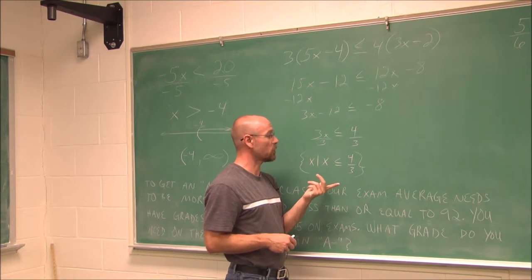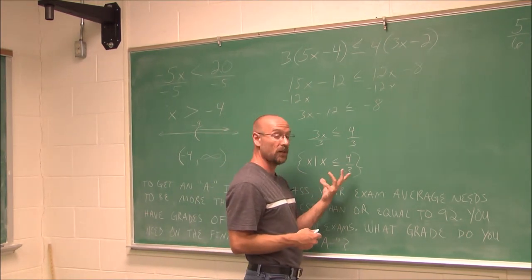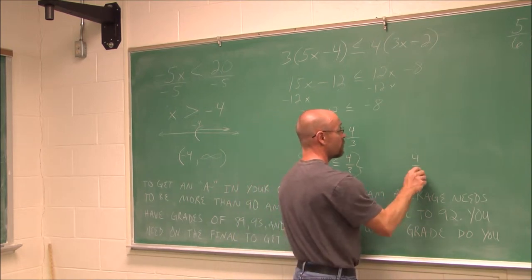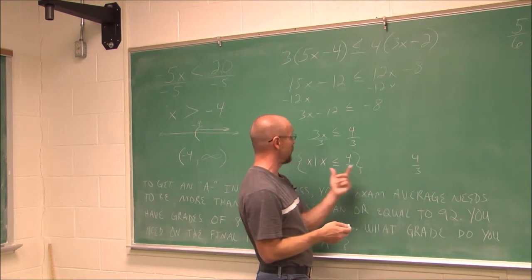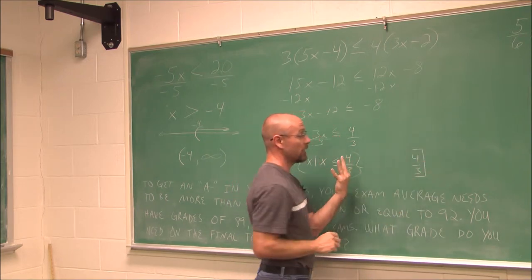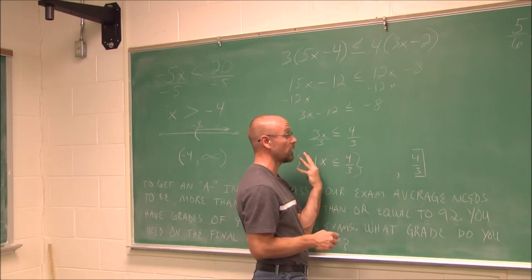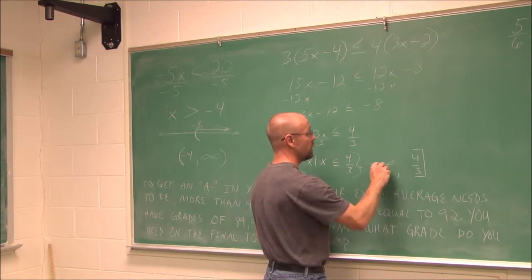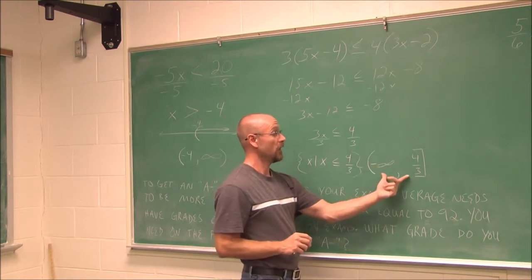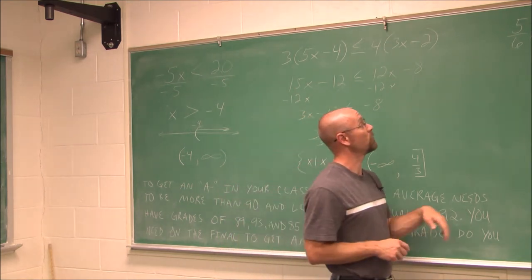Let's skip the graphing and write it in interval notation. If x is less than or equal to 4 thirds, since it's equal to 4 thirds I put a bracket around it. Since x is less than, x goes to the left, so values go off to negative infinity. We enclose that with a parenthesis. So interval notation is negative infinity to 4 thirds, with a parenthesis on the left and a bracket on the right.